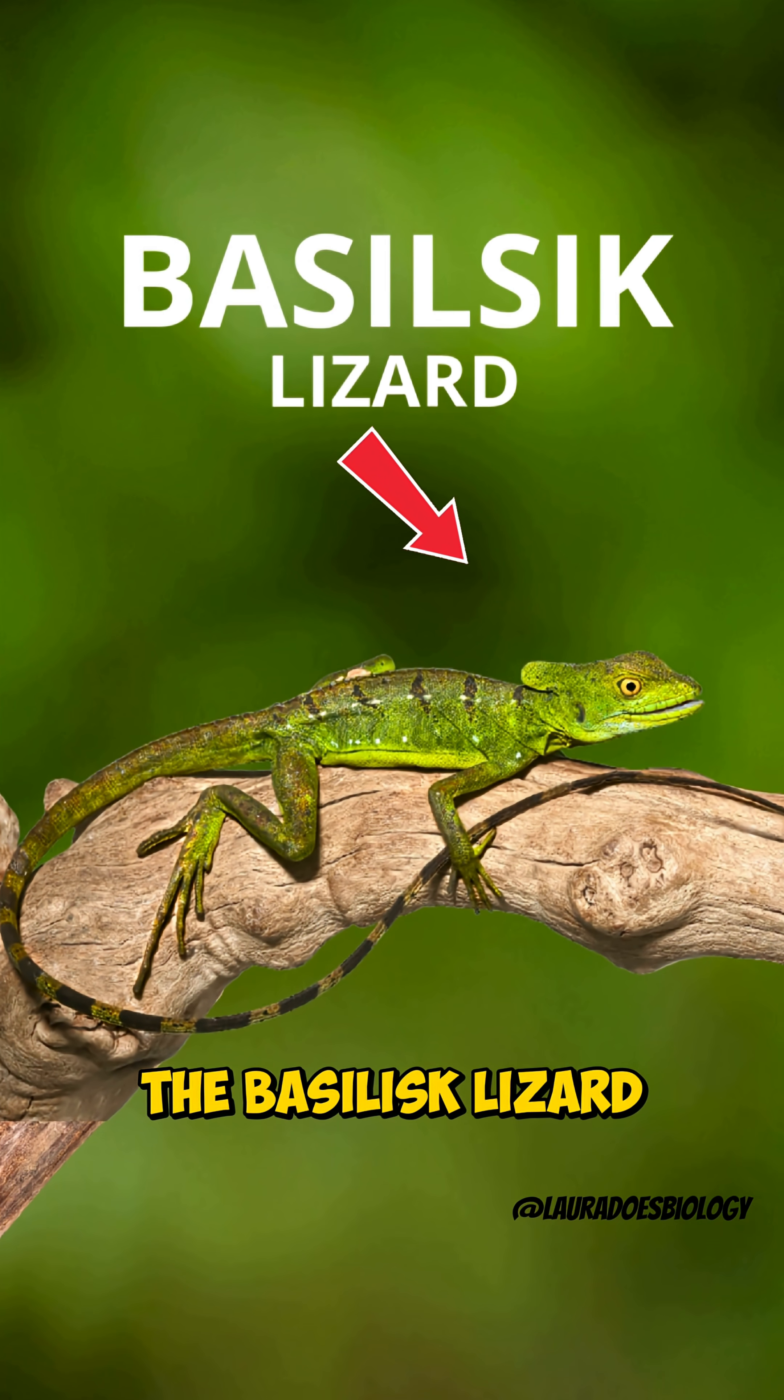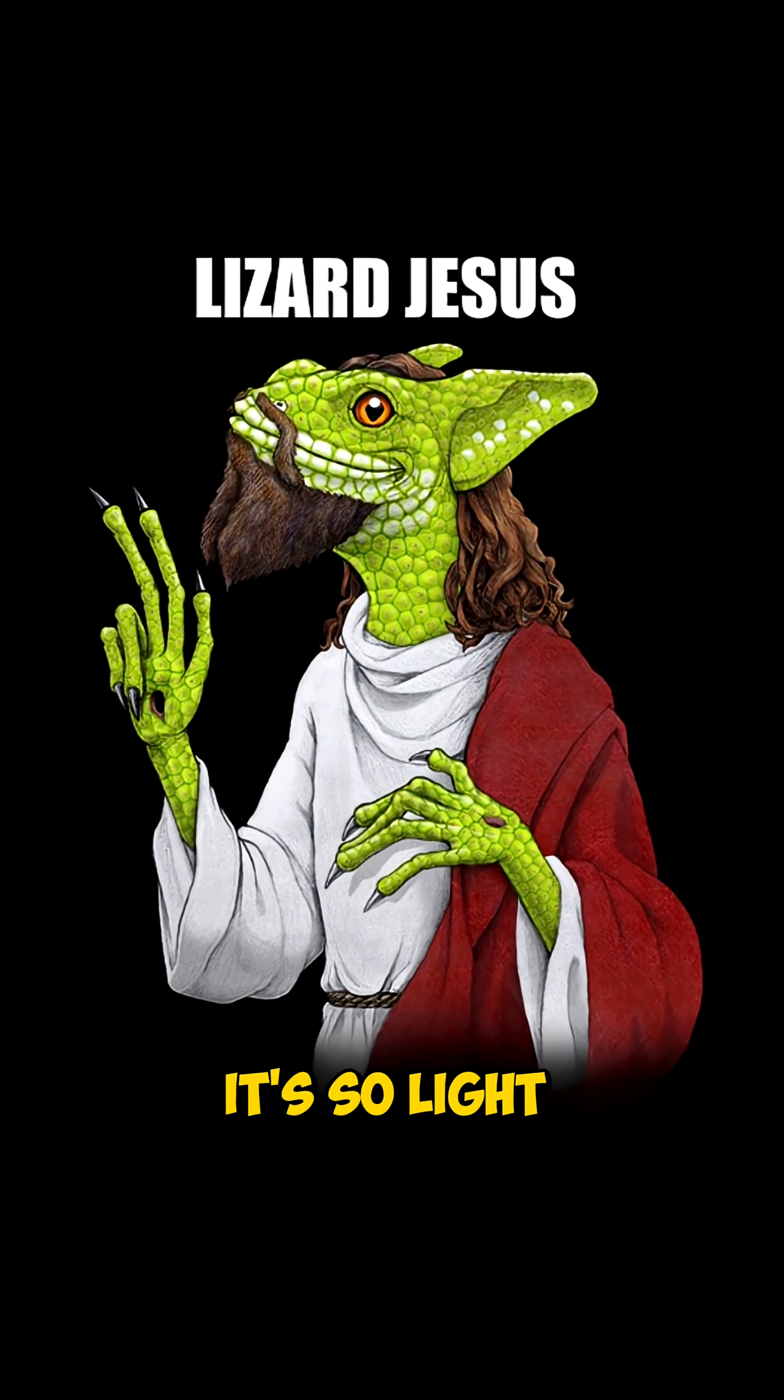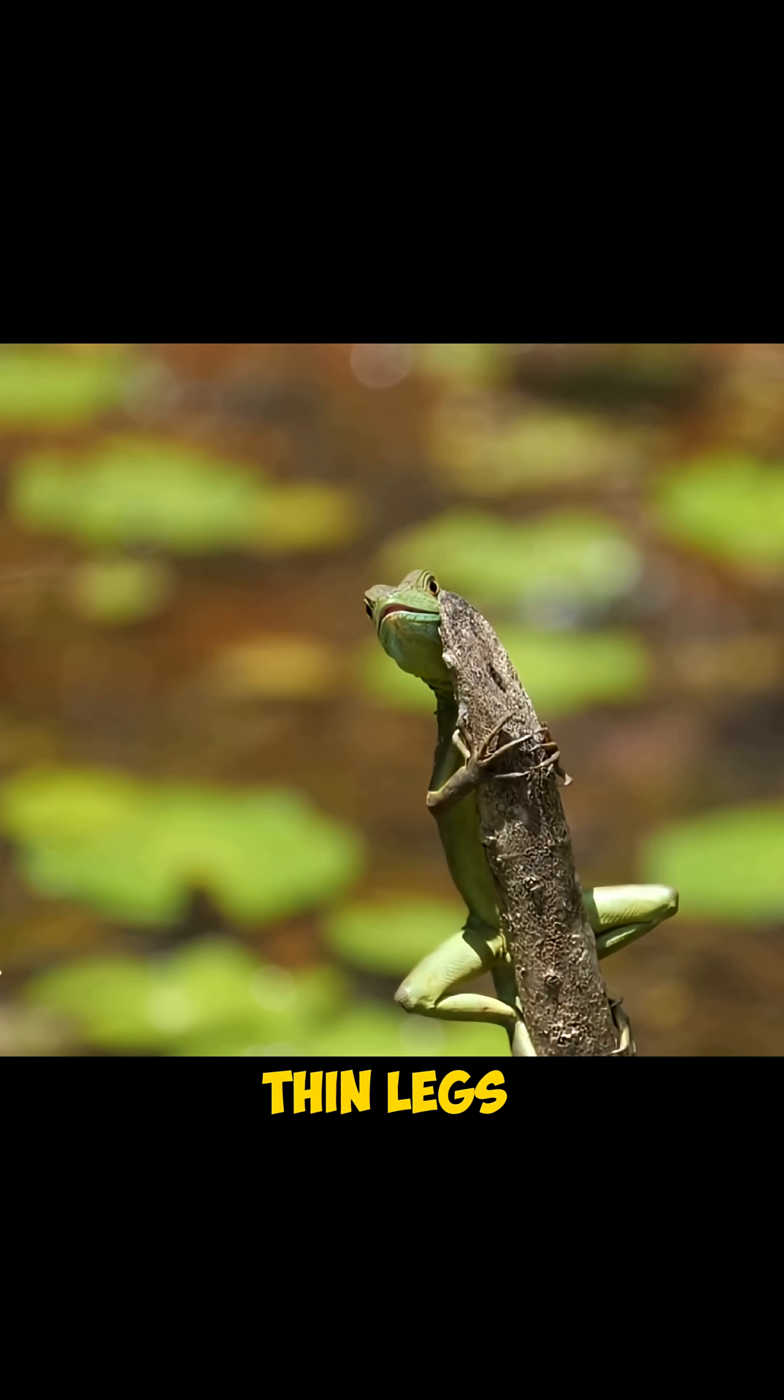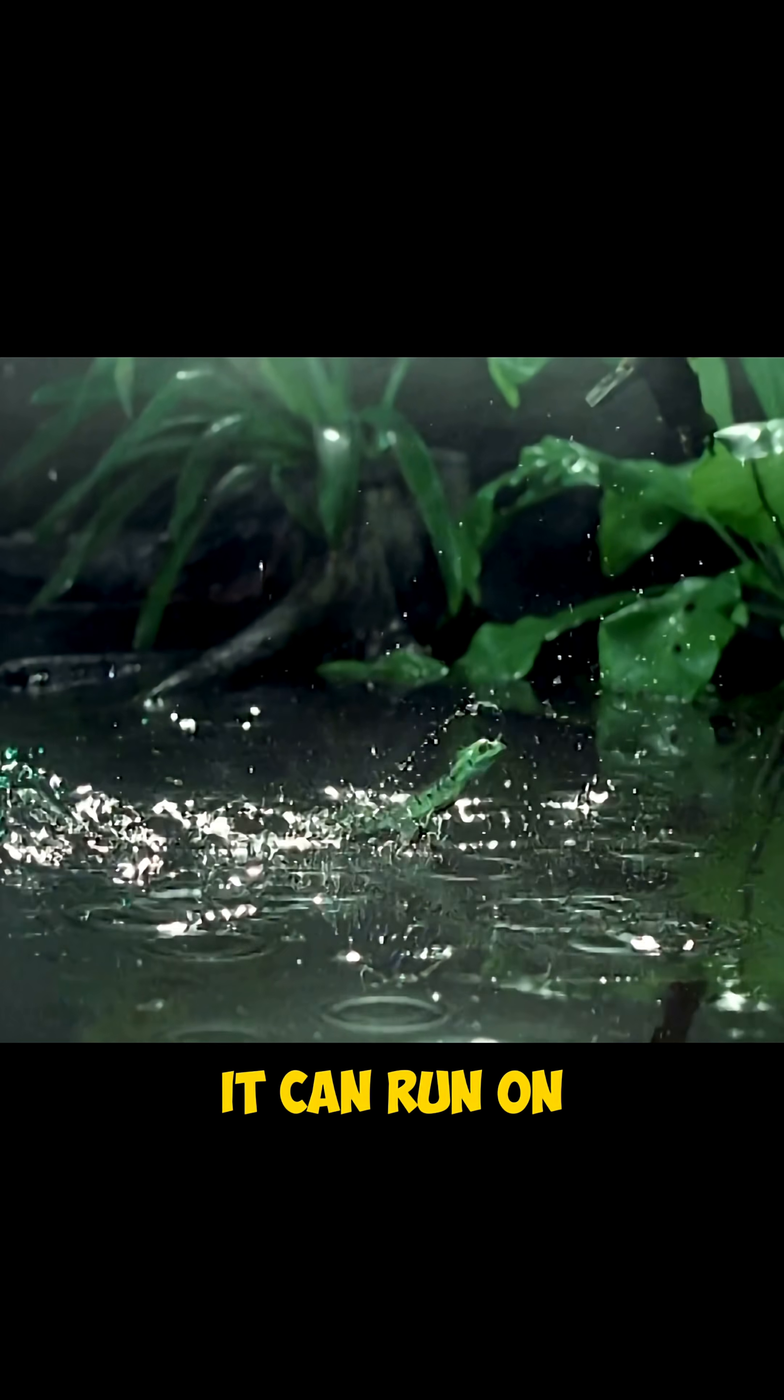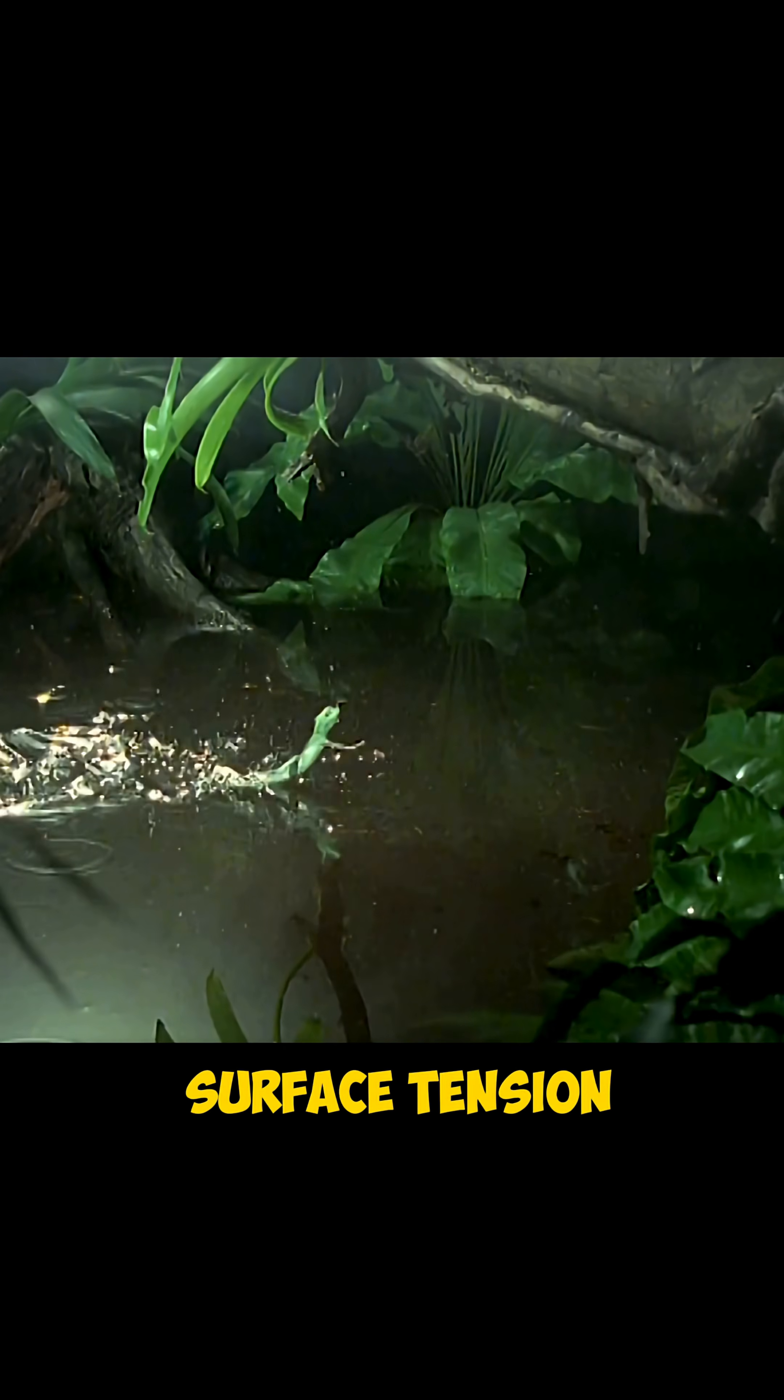This is the basilisk lizard, also known as the Jesus lizard. It's so light and has long thin legs with wide feet, which means it can run on water without breaking the surface tension.